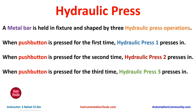Hydraulic Press. A metal bar is held in a fixture and shaped by three hydraulic press operations. When the push button is pressed for the first time, Hydraulic Press 1 presses in. When pressed for the second time, Hydraulic Press 2 presses in. And when pressed for the third time, Hydraulic Press 3 presses in. For this example, we will use normally open contacts as well as normally closed contacts, and some memory bits. Let's move to EcoStruxure Machine Expert where we will draw a ladder diagram for the Hydraulic Press machine.